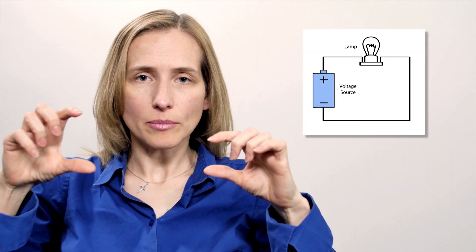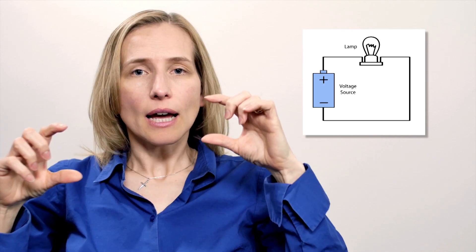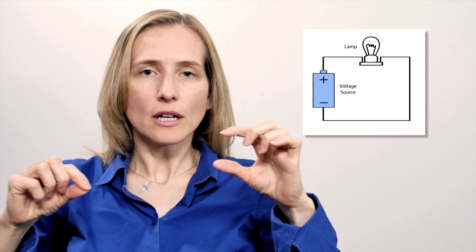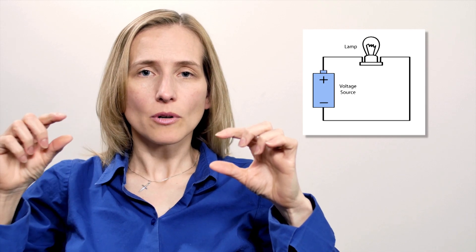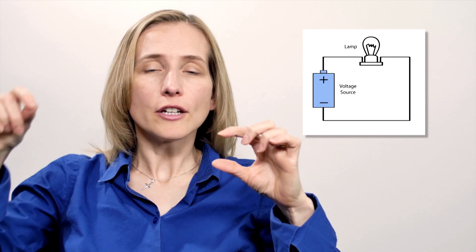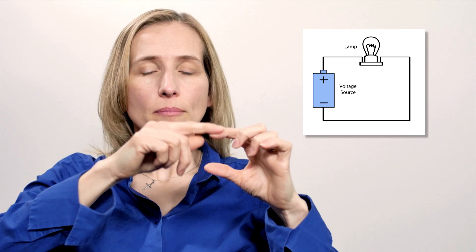Let's try to understand electricity a little bit better with an example. Picture a battery, a wire, and a light bulb all connected in series. The electrons travel from the negative terminal of the battery through the wire to the light bulb. When they reach that light bulb, the light bulb turns on. Then they travel around to the positive part of that battery, and that creates electricity.